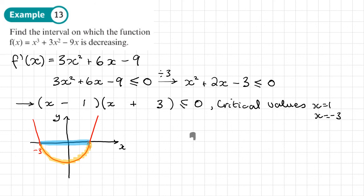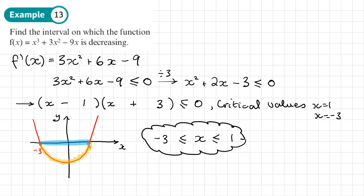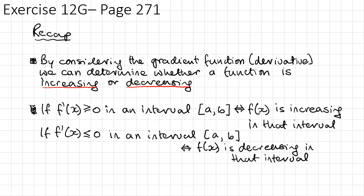So x needs to be between −3 and 1: less than or equal to 1 and greater than or equal to −3. This is the interval on which the function is decreasing. We can write that as x ∈ [−3, 1], using square brackets. You should now be able to do exercise 12G on page 271 of the textbook.